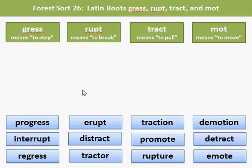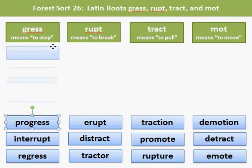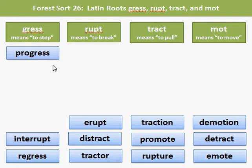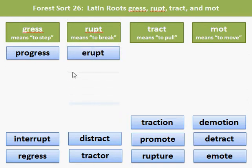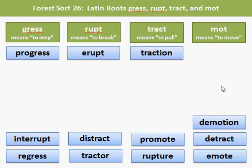Let's take a look at how these roots impact the words below. The word progress includes the root gress, meaning to step. So progress literally means a step forward because pro means forward. Erupt includes the word root rupt, which means to break, so to erupt is to break out.